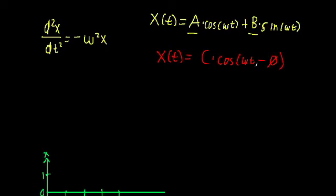I want to point out a couple of characteristics of this different general solution. First, it is a solution to this differential equation — if you plug it in, you will find that it works. Second, like before, we have two undetermined coefficients, and the only way we can find their values is by plugging in two initial conditions. And lastly, this solution has the same angular frequency omega as before.